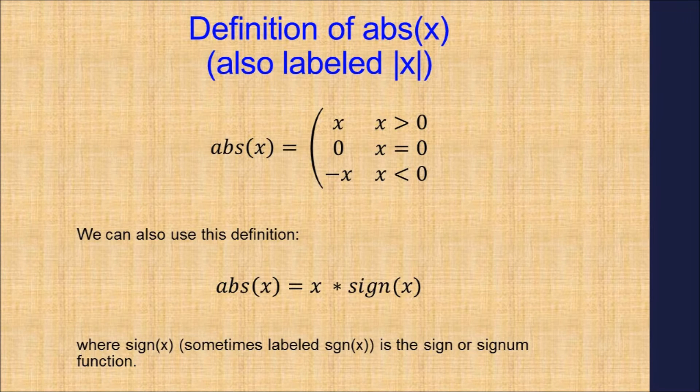The most common definition of the absolute value is defined in parts: x when x is positive, 0 when x is equal to 0, and minus x when x is negative. Basically, no matter what the real number x is, the absolute value of x is always non-negative.